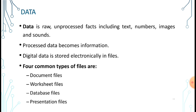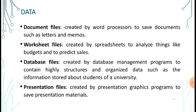The next part of the information system is data, which is raw and unprocessed facts that include text, numbers, images, and sound. When processed, data becomes information. Digital data is stored electronically in files because computers use the binary system of zeros and ones. We have four common types of files: document files, worksheet files, database files, and presentation files.